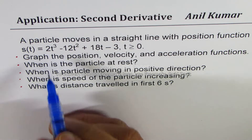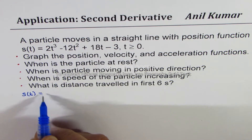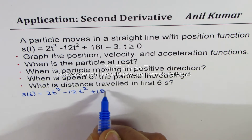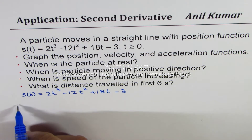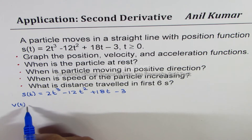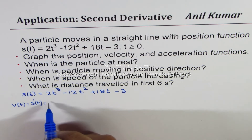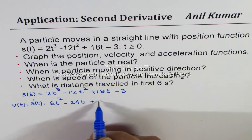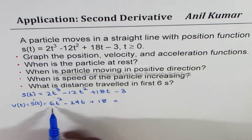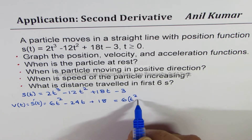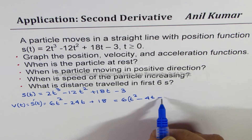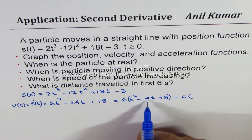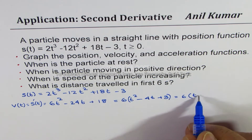Let's begin by finding the derivative of the position function. We have s(t) = 2t³ − 12t² + 18t − 3, where t ≥ 0. The velocity is the derivative of the position, so v(t) = 6t² − 24t + 18. Factoring out 6 gives 6(t² − 4t + 3), which further factors as 6(t − 1)(t − 3).